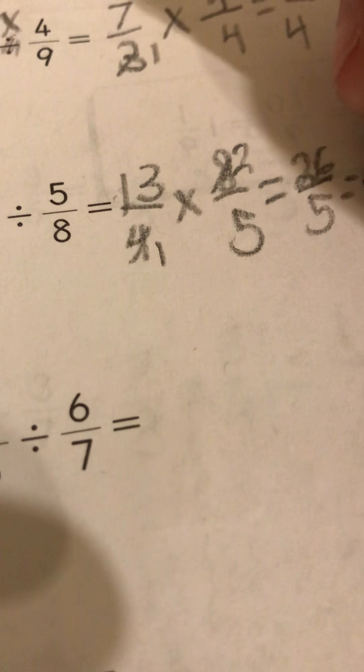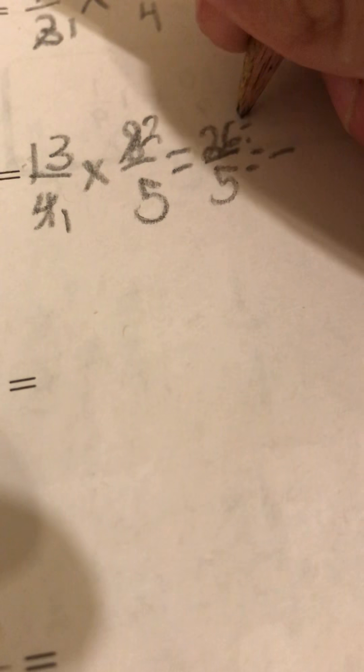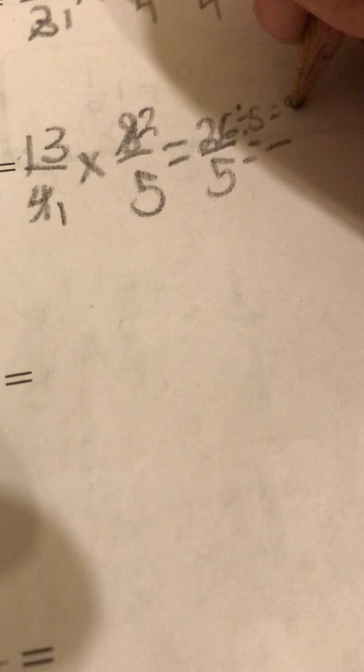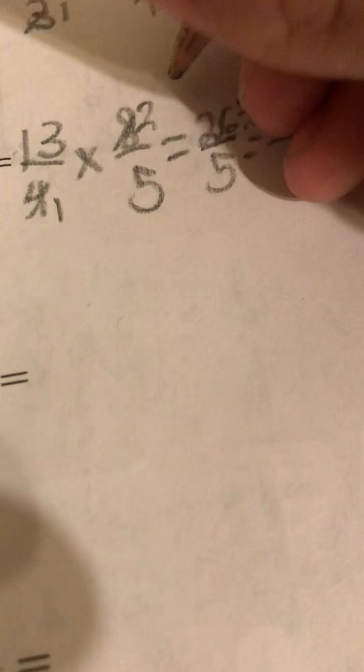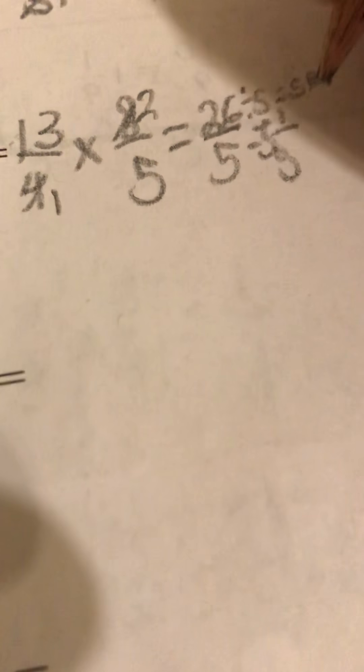Which equals, like I said, 26 divided by five equals five with a remainder of one, so five and one fifth.